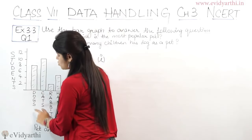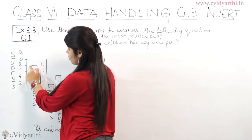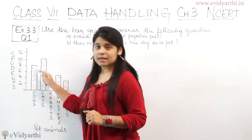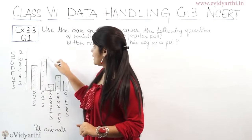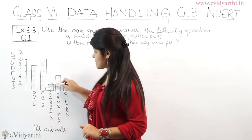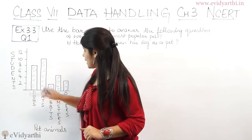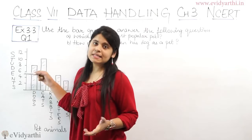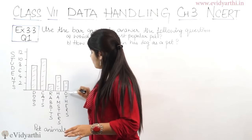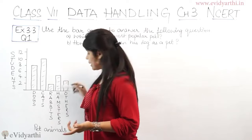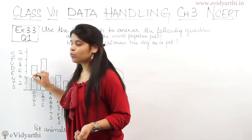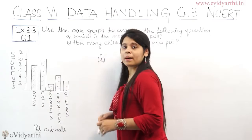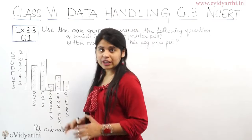Yeh dog wala hai — this is going up till 8, matlab ki 8 students ke paas dogs hai. Similarly, cat, rabbit, hamster — hamster is between 6 and 4, means around 5 students. Then we have others — inke alawa jo hai, that is between 2 and 4, which can be 3. Is tarah se hum bar graph ko read karte hai — ki bar kahan tak ja raha hai, kaun sa hai aur kitna hai.